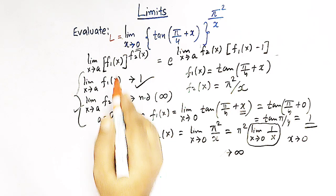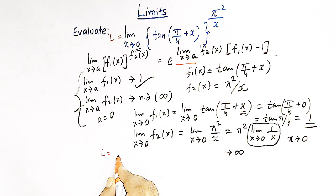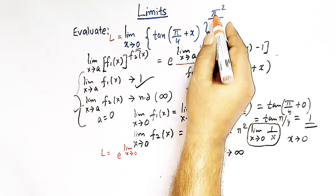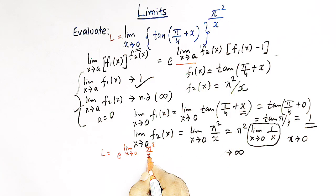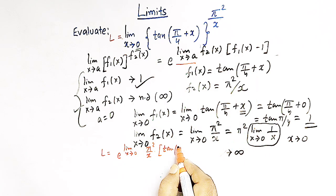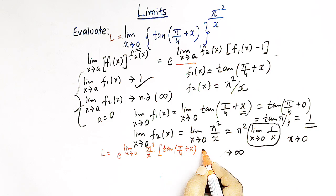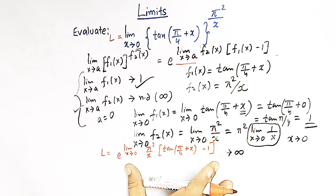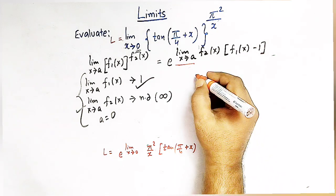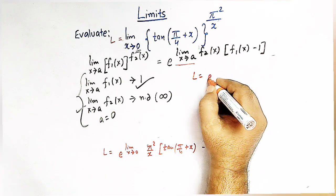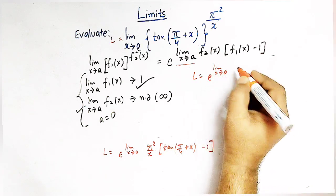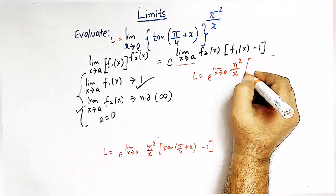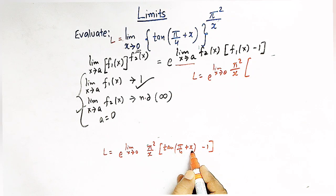The value of limit L is now given by the rule: e raised to limit x tends to 0 of f2(x) times (f1(x) minus 1), that is e raised to limit x tends to 0 of (π²/x) times (tan(π/4 + x) minus 1). Now we have to evaluate this limit.